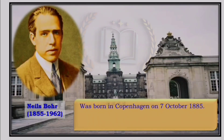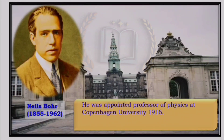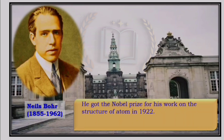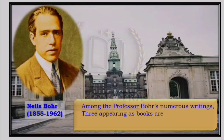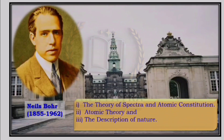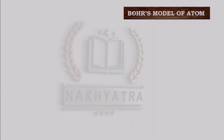Niels Bohr was born in Copenhagen on 7 October 1885. He was appointed Professor of Physics at Copenhagen University. He got a Nobel Prize for his work on the structure of the atom in 1922. Among Professor Bohr's numerous writings, three books are notable: 'The Theory of Spectra and Atomic Constitution,' 'Atomic Theory,' and 'The Description of Nature.'